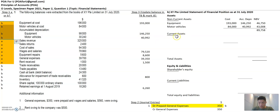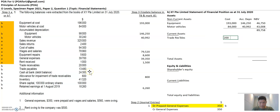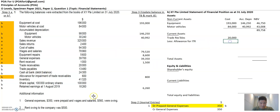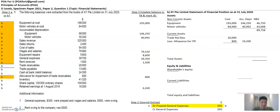Now current assets. The first item is trade receivables — put in 20,000. Then less allowance for impairment of trade receivables. This always tags along with trade receivables. The balance is not 600 — there's a new balance: 800. Remember that's 4% of the balance. Net trade receivables are 19,020. Trade receivables is done.